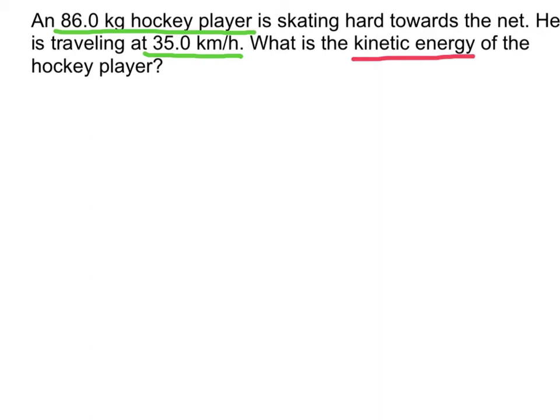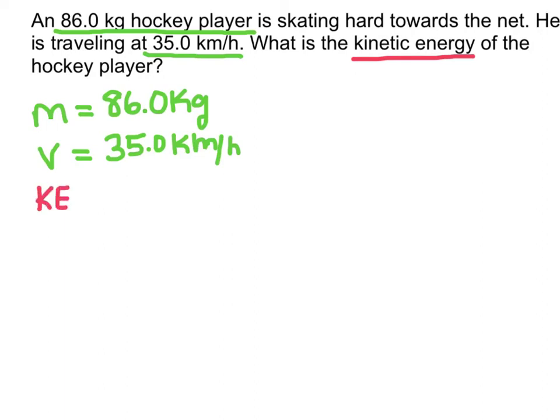So let's start with the first thing we underlined and this is the mass of the hockey player. So I'm going to label this M and I'll just write that in here just to help organize myself. The other thing that's given is the velocity of the hockey player which is 35 kilometers per hour. And then what I'm looking for is kinetic energy. So I'm going to list that here as well just with a question mark for now.